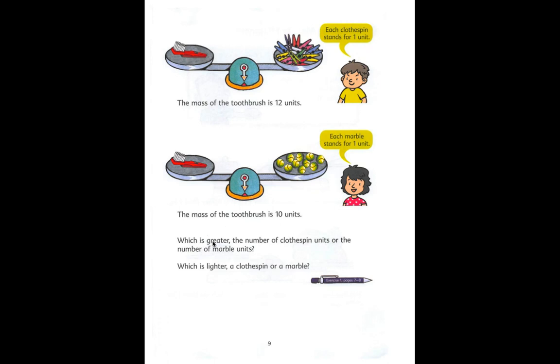So which is greater? The number of clothespin units or the number of marble units? Well, the marble units will have a greater mass than one clothespin unit. So we can say that the clothespin is lighter than a marble because you need 12 clothespins to have the mass of the toothbrush to be as heavy as those 12 clothespins versus 10 marbles to be the mass of the toothbrush.